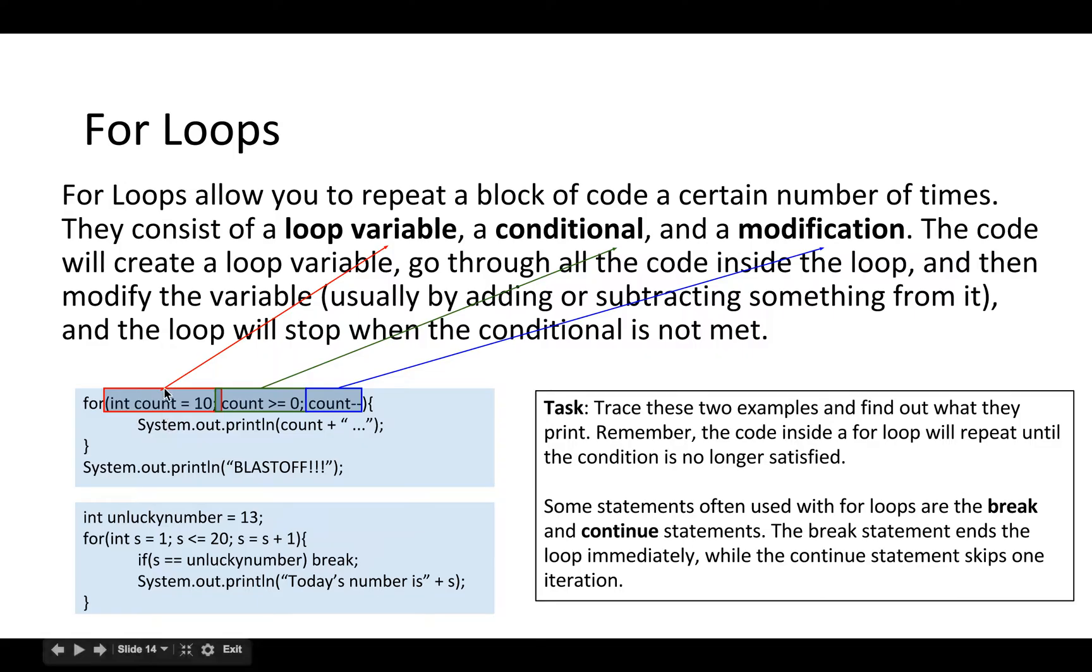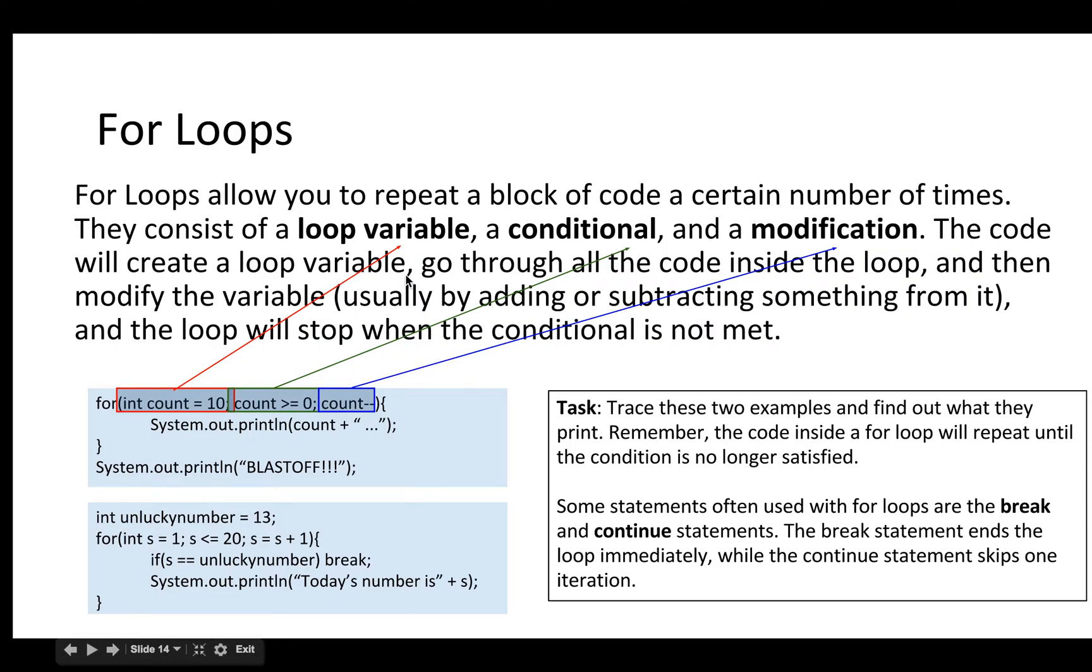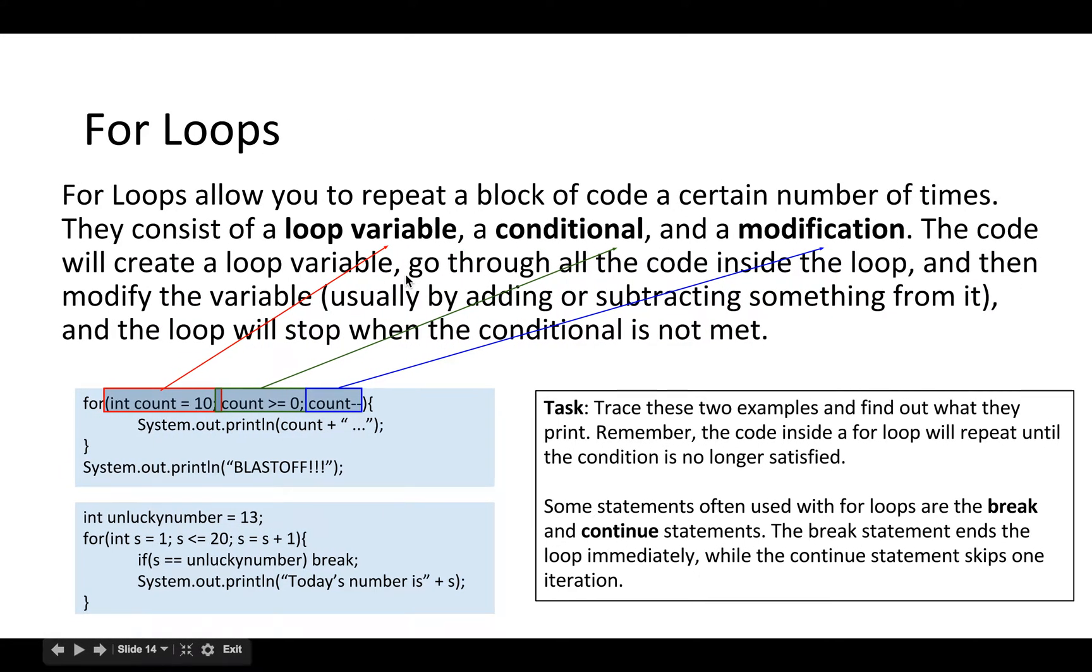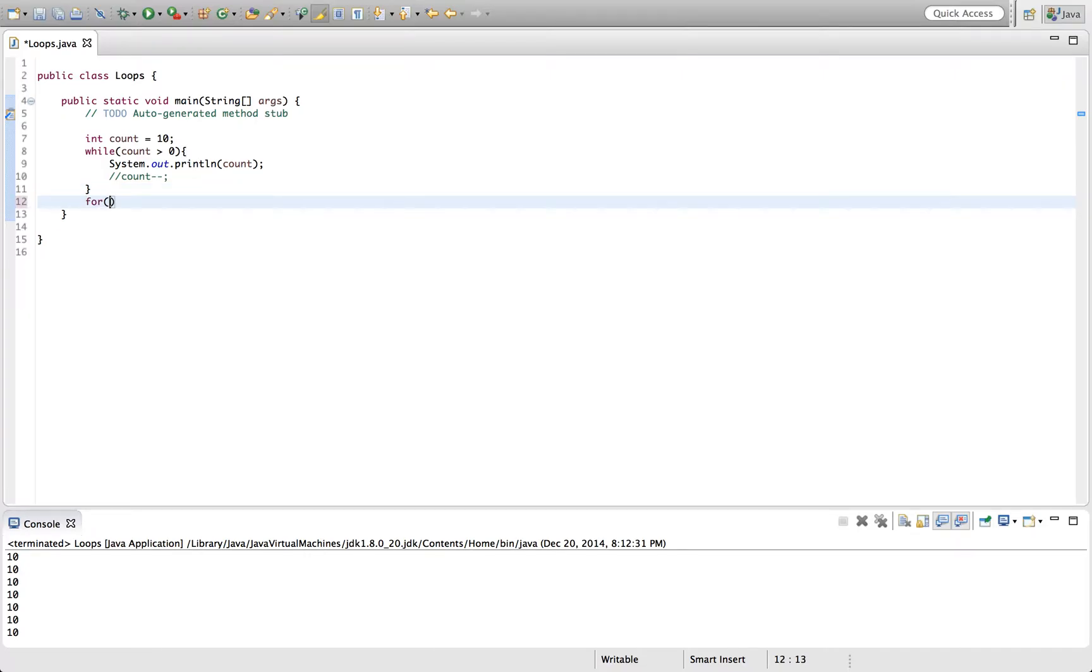For loops are slightly different. They contain more parts. But they're kind of more specialized towards repeating things a certain number of times. Let's say you want to repeat something 10 times. We can actually do the, execute the countdown with the for loop, too. So inside the for loop, inside the parentheses, you have three statements. First, you have an initialization. So you say something like C equals 10. Then you can say, you want C, then you have a condition. So you want this loop to execute as long as C is greater than zero.